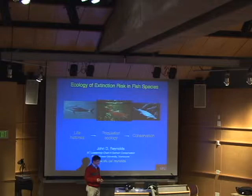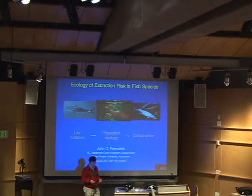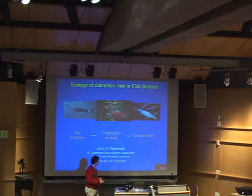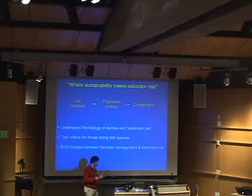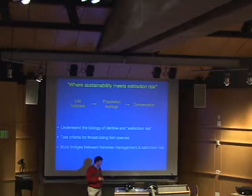So it's basically going to be an attempt to integrate several different fields, and I will be a little bit scattered. You probably got a clue already from Tom's introduction that what he called diverse, you might view as being rather scattered, but I hope I can try to draw it around the general theme in which I want to try to understand the biology of decline and what people often refer to as extinction risk.